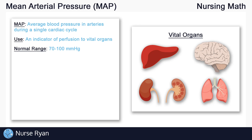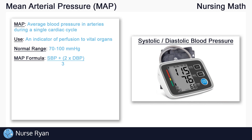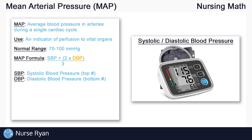To calculate mean arterial pressure, we use this formula: MAP is equal to the systolic blood pressure plus 2 times the diastolic blood pressure, then divide that answer by 3. All we need to know is our systolic blood pressure, which is the top number when we take a blood pressure, and our diastolic blood pressure, which is the bottom number.